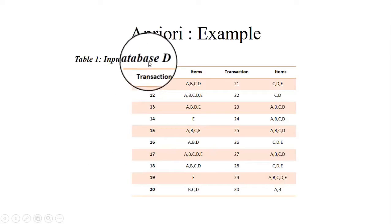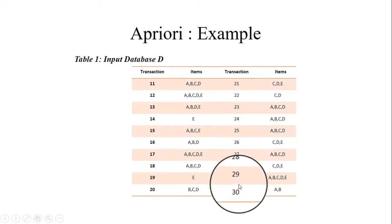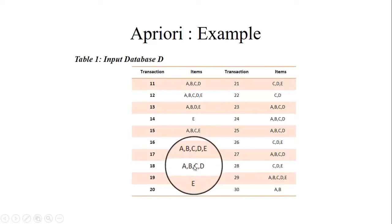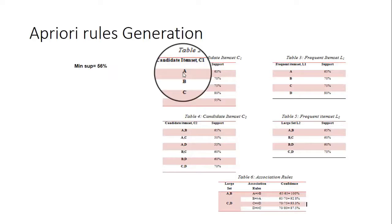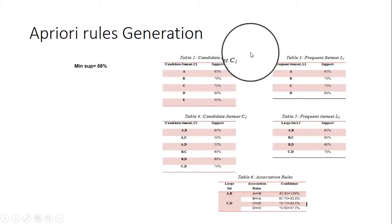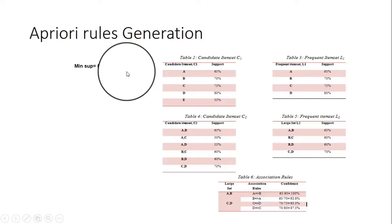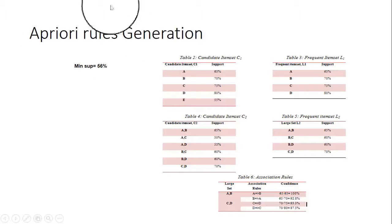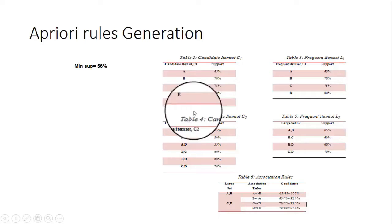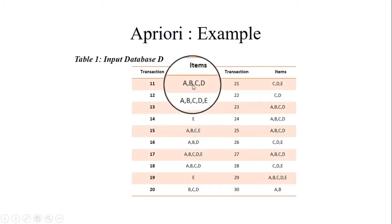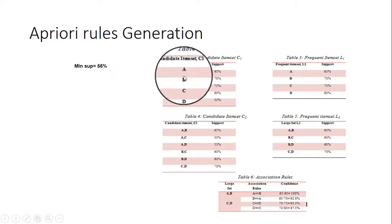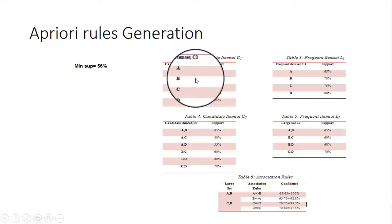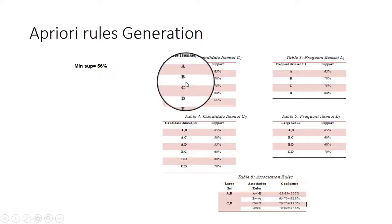As an example, we have an input database D with transactions from T1 to T30, each transaction having some items. For candidate set C1 generation, the minimum support is 56%. We take single item sets A, B, C, D, and E. We count how many times each item appears across all transactions and find the support for A, B, C, D, and E. Here, A has 65%, B has 70%, and so on. Item set E has support less than 56%, so we reject it.